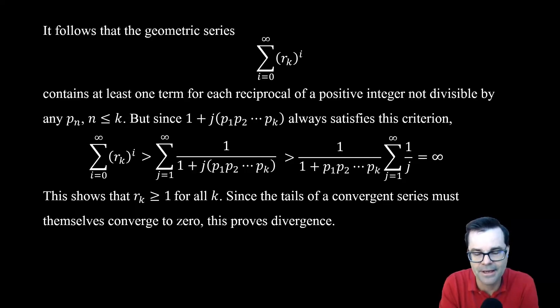So if every tail is bigger than or equal to 1, though, that means the tails cannot possibly be converging to 0. But the tails of any convergent series have to themselves converge to 0. So the only possible conclusion is that the series of the reciprocals of the primes must diverge. And that is the end of the proof.